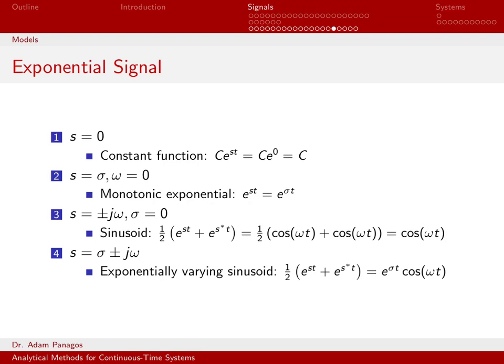Let's talk about some special cases of this exponential signal. First of all, what would happen if s was 0? If it was 0, then we can actually get out a constant function. So if we could put some c e to the st, e to the st is really e to the 0, e to the 0 is 1.